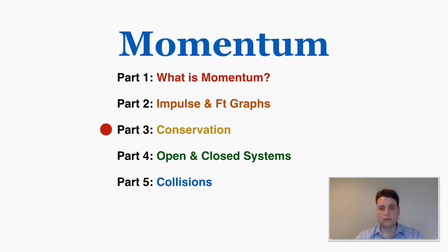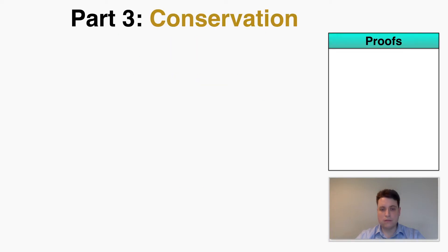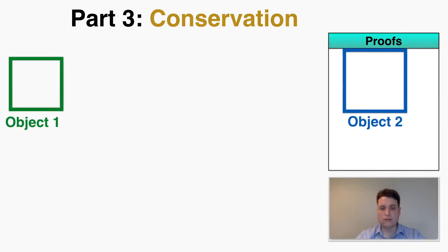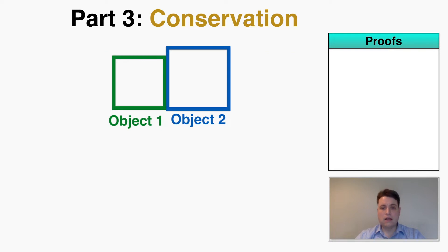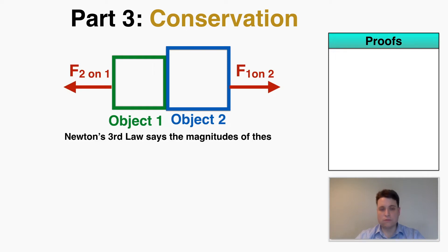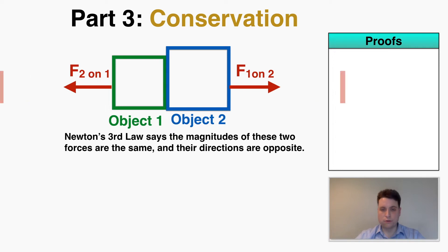To illustrate how conservation works, I'm going to start using rules and concepts that you already know to build up to some new information. Let's imagine that we have a collision between object 1 and object 2 moving in opposite directions. I know based on Newton's third law that when object 1 puts a force on object 2, object 2 puts the exact same magnitude of force back on object 1 in the opposite direction. This is always true for every single collision based on Newton's third law.